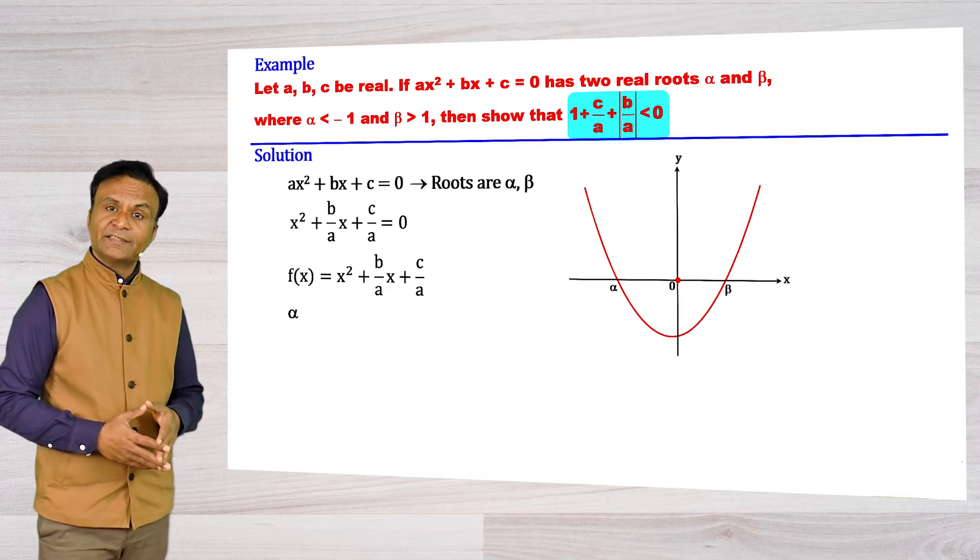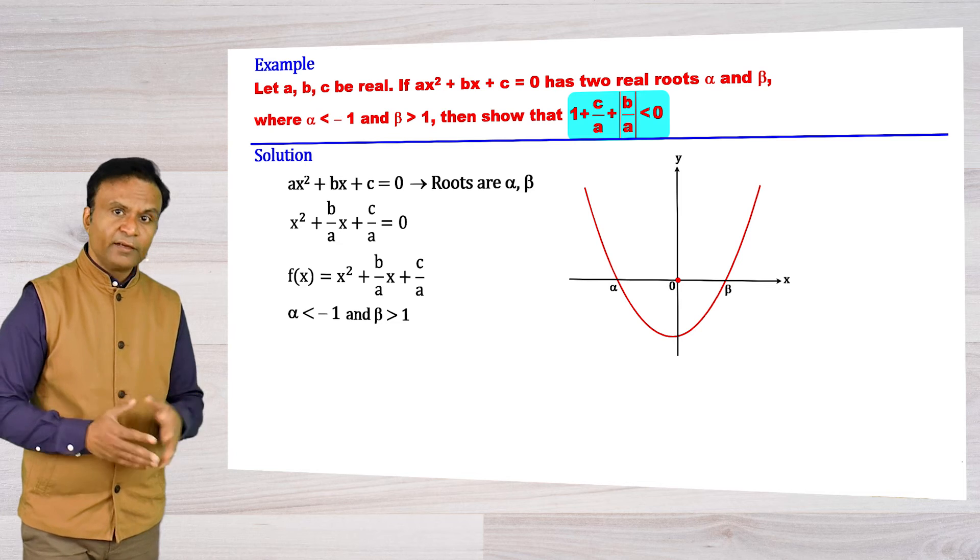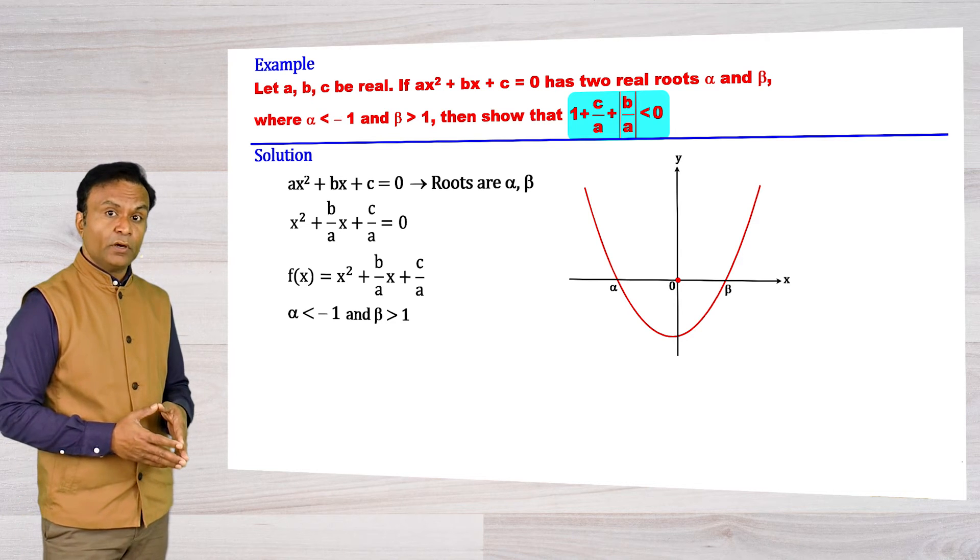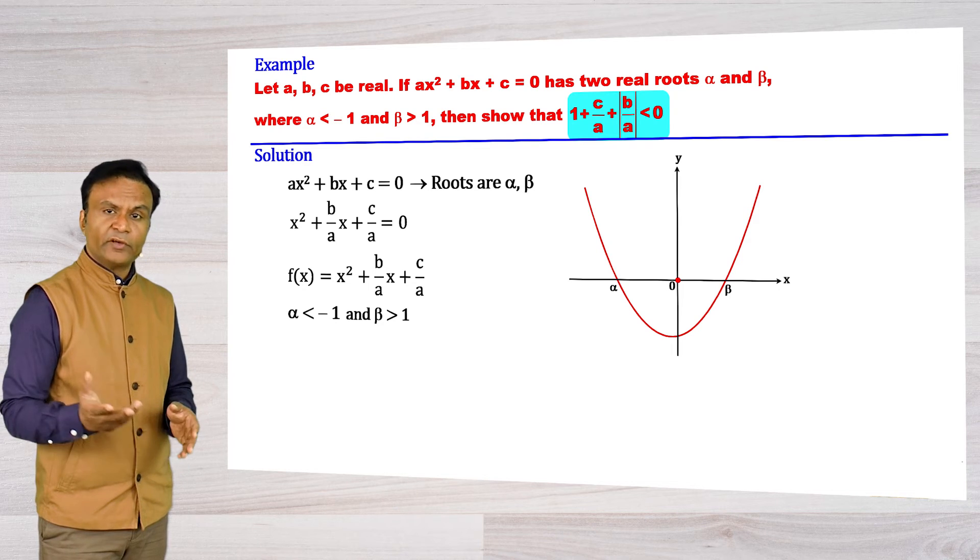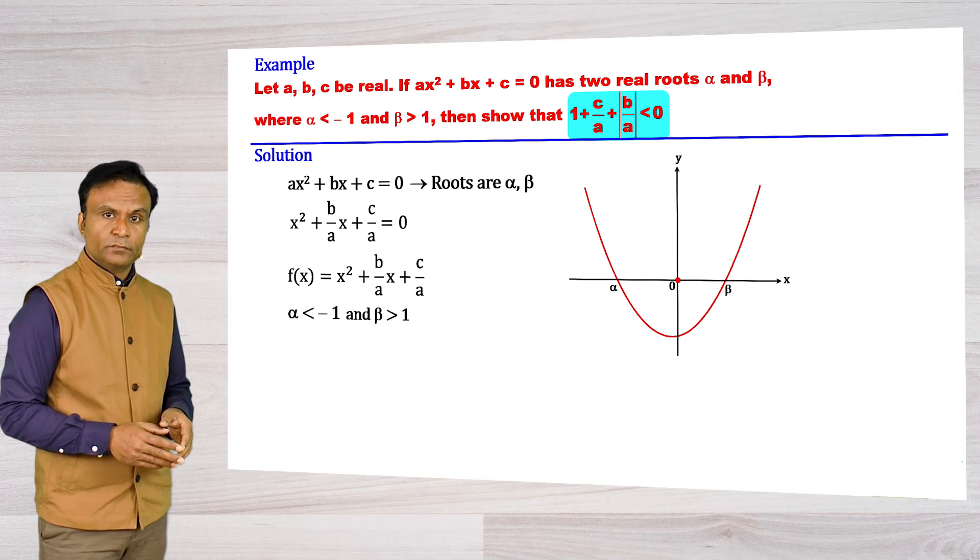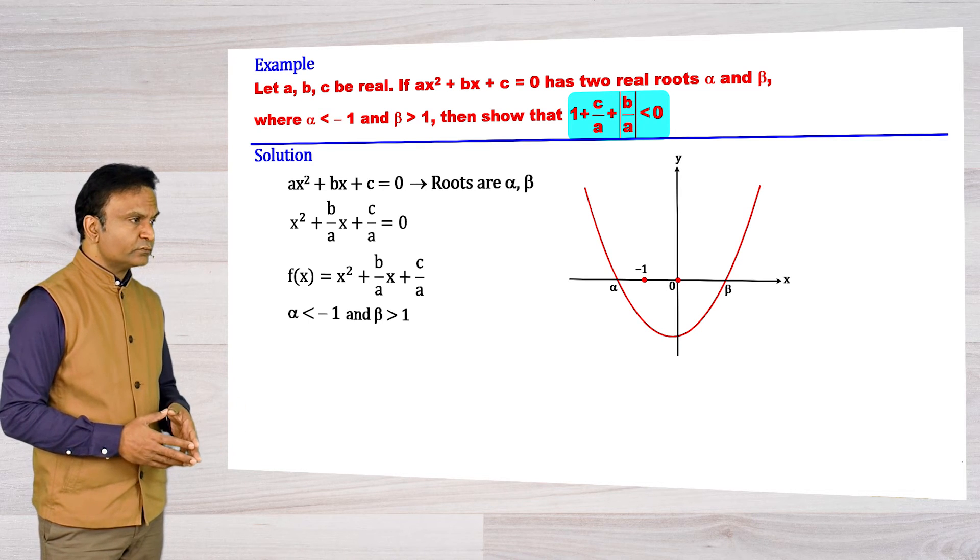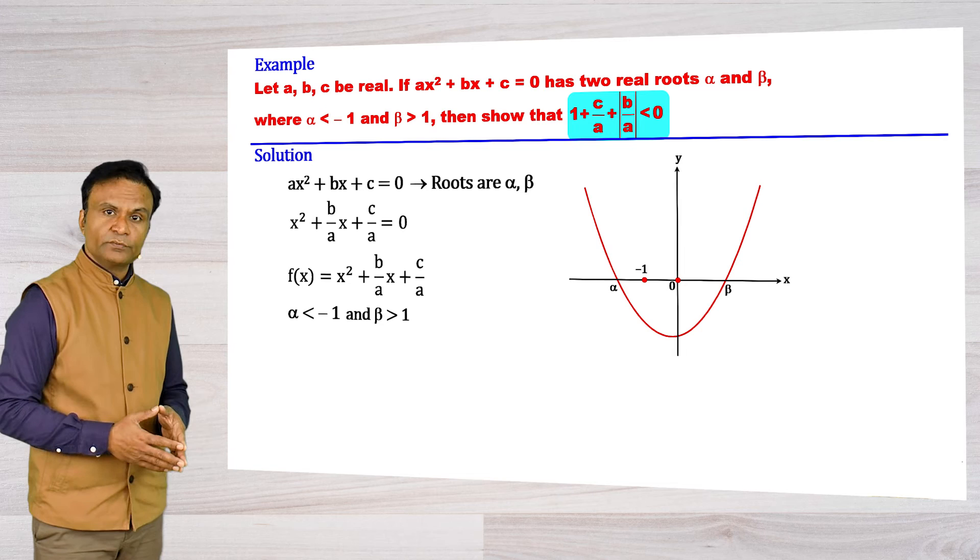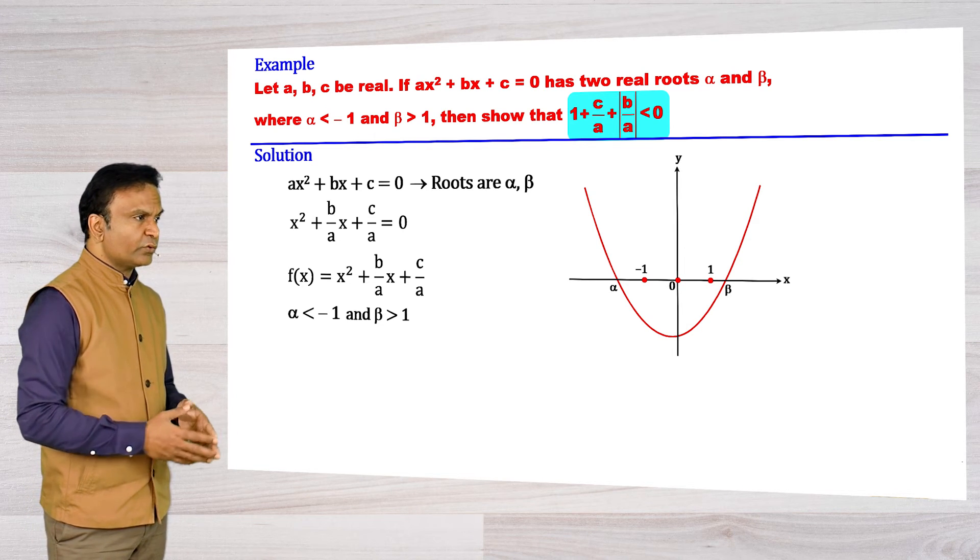Now, α is less than -1 and β is greater than 1. So where do you locate -1 and 1 on the x-axis? Obviously, -1 must be here somewhere between α and 0, and 1 here between 0 and β.